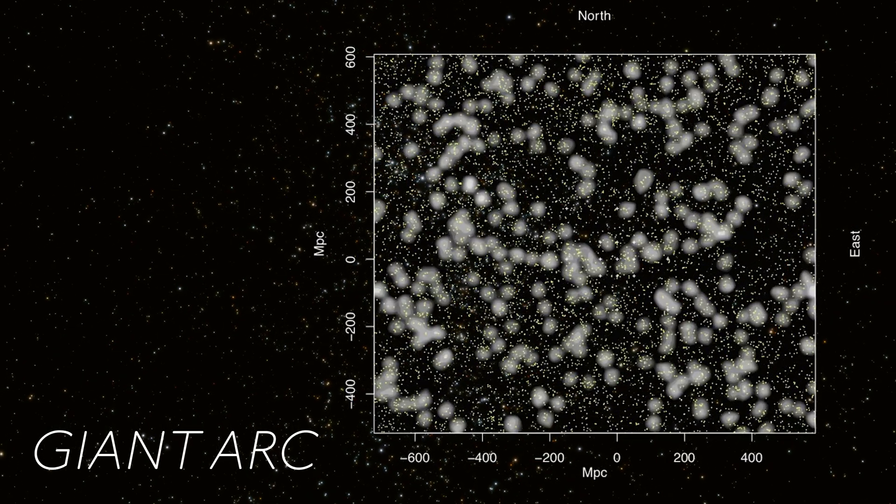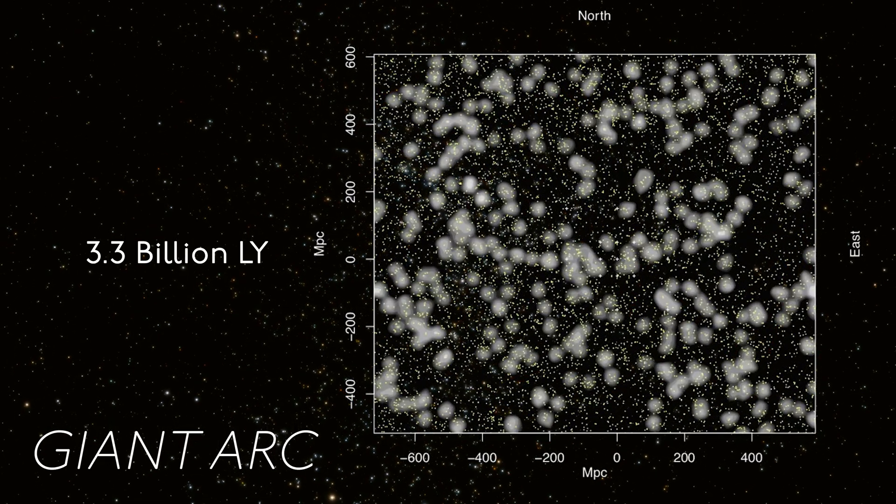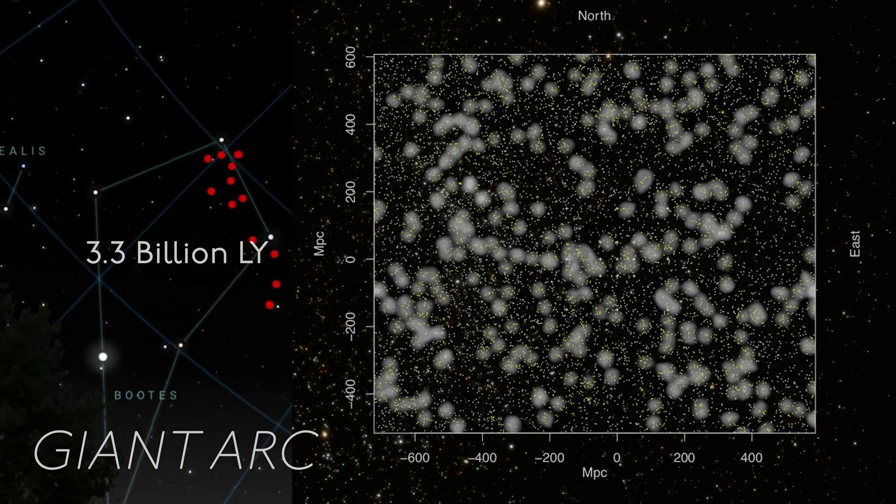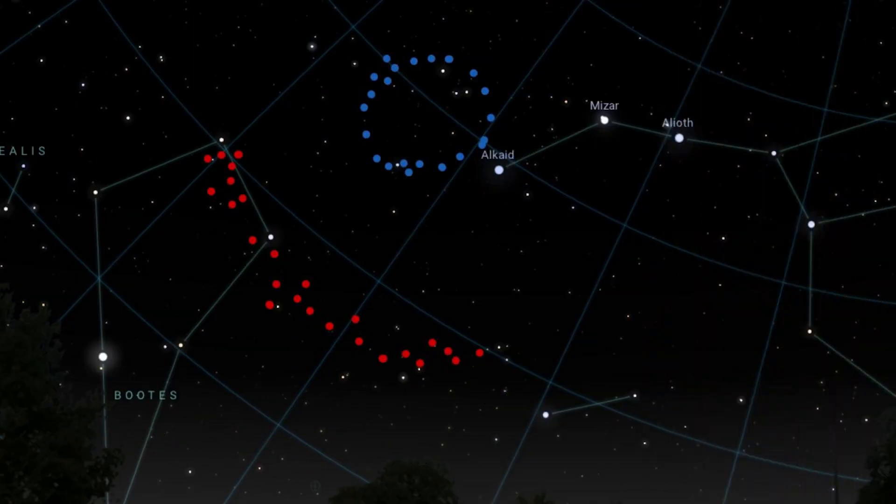This anomaly is comparable to another discovery by Lopez, the giant arc, a curving filament of galaxies extending 3.3 billion light-years. Intriguingly, these two structures lie side-by-side, hinting at a potentially larger formation.